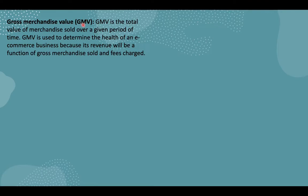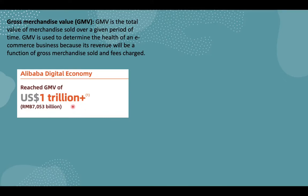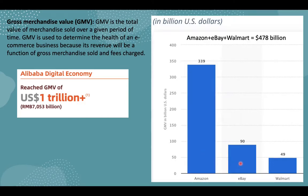Next, we'll look at GMV — Gross Merchandise Value — which is a very important parameter for assessing the health of e-commerce companies. GMV is the total dollar amount of goods sold on a platform over a given period, generally one year. The higher the GMV, the better the health of the business. Alibaba has a GMV of $1 trillion, which they reached this year. To put this in perspective, Amazon, eBay, and Walmart combined have a GMV total of only $478 billion.